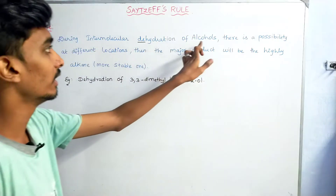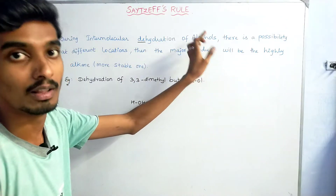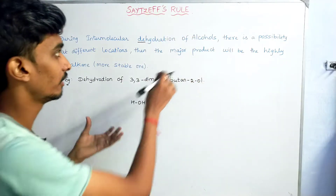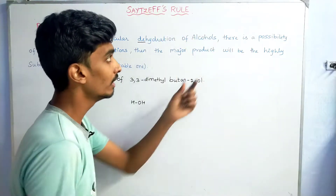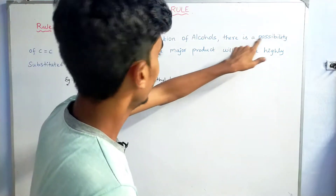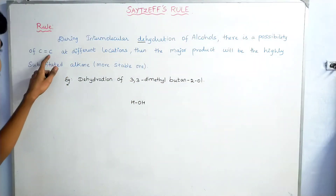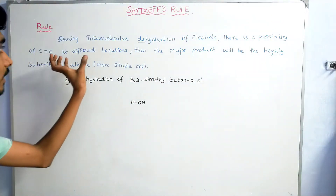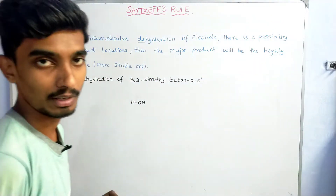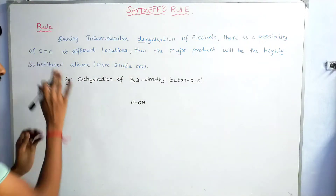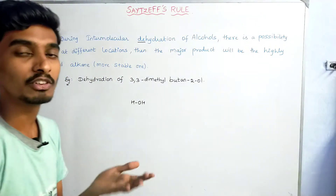During intermolecular dehydration of alcohol, there is a possibility of a carbon-carbon double bond forming at different locations. Let me write an example to illustrate this.